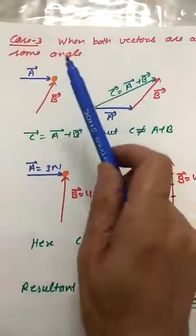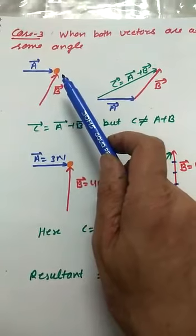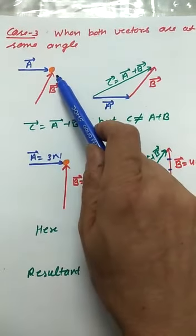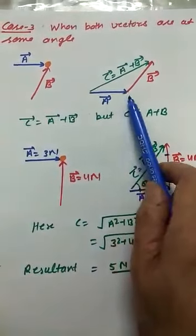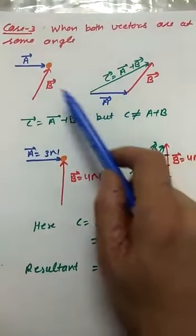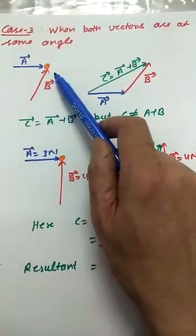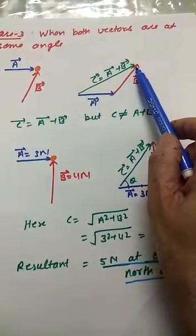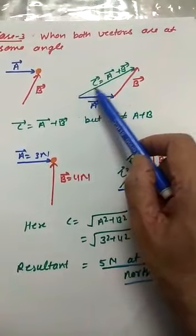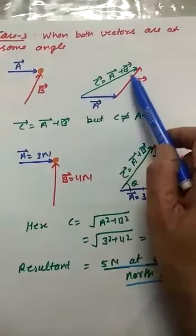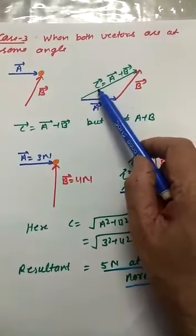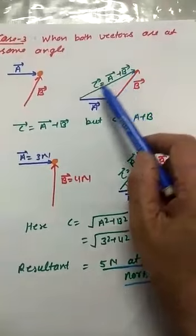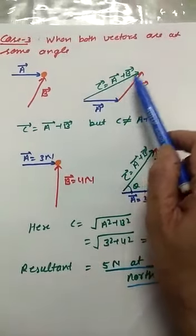Case 3: both vectors are at a certain angle. Draw vector A first, then from the head of vector A draw vector B in the given direction at the given angle. The resultant is drawn from the tail of the first to the head of the last, giving vector C equal to vector A plus vector B. If A is 3 cm and B is 4 cm, we measure the length of C to find its magnitude.